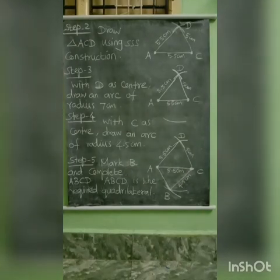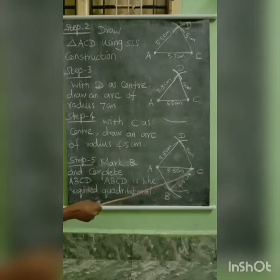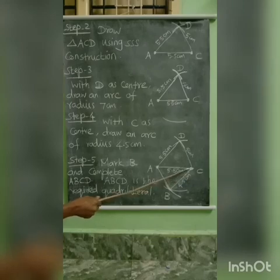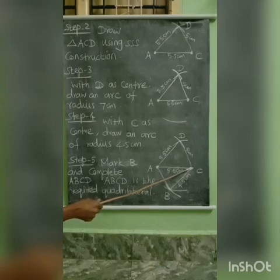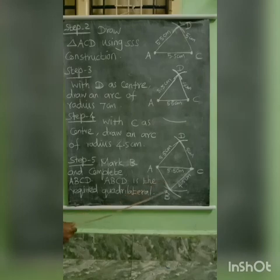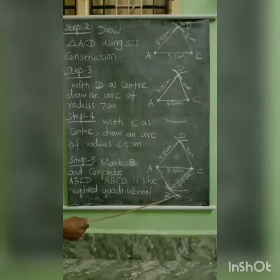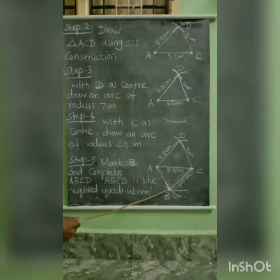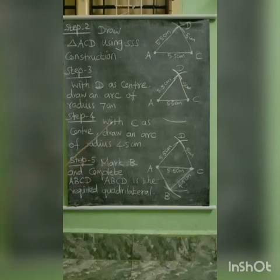Then, CB length is 4.5 cm is given. In the next step, take C as center with radius 4.5 cm to draw another arc. These two arcs intersect at one point. Now to mark that point as B. Steps 4 and 5: with C as center, draw an arc of radius 4.5 cm.